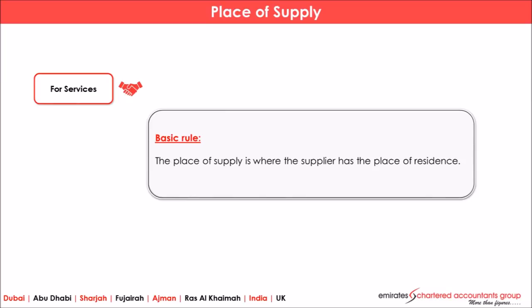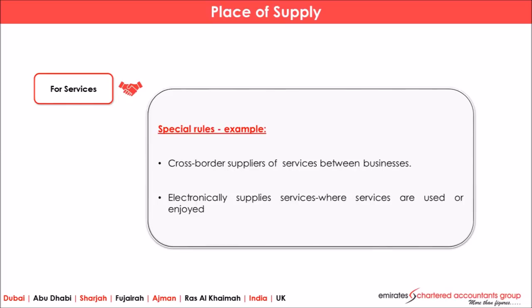The basic rule for the place of supply of services says that the place of supply is where the supplier has the place of residence. That means where the supplier resides, that is the place of supply of services. However, there are special rules — for example, cross-border supplies, export of services, electronically supplied services, and telecommunication services, where the place of supply is where the service is enjoyed.